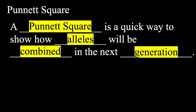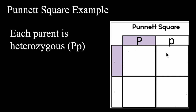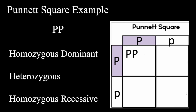Now, the Punnett squares. A Punnett square is a quick way to show how alleles will be combined in the next generation. When calculating Punnett squares, if I were to cross two heterozygous purple flowers — heterozygous being a capital and a lowercase, both having different alleles — I'm going to take one of those heterozygous and put them on the top, and the same heterozygous on the left-hand side. Crossing the letters in the Punnett square gives you the possible combinations of what your future offspring will be. Taking a letter from the side and one from the top, you will see that we have homozygous dominant.